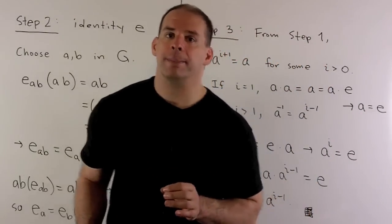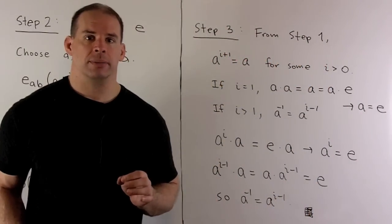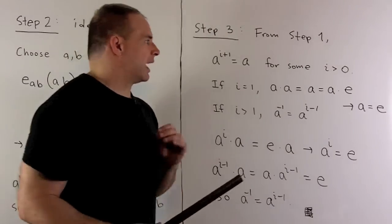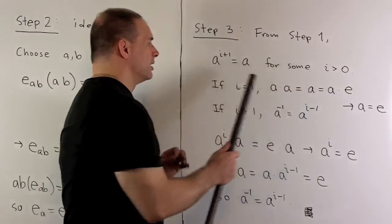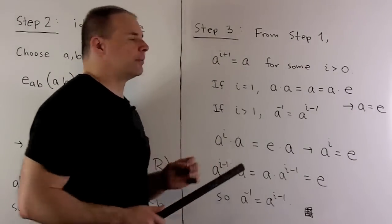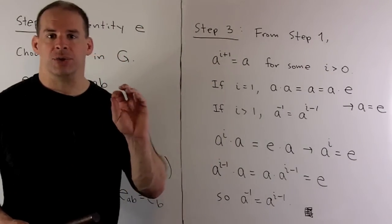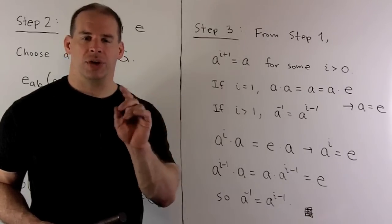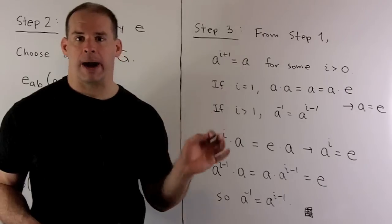For our third step, we want inverses. So, we fix an A. Then by step one, there's going to be a positive I, such that A to the I plus one is equal to A. I break it into two cases. Since we don't know what A to the zero means, we only took A to the one or higher powers.